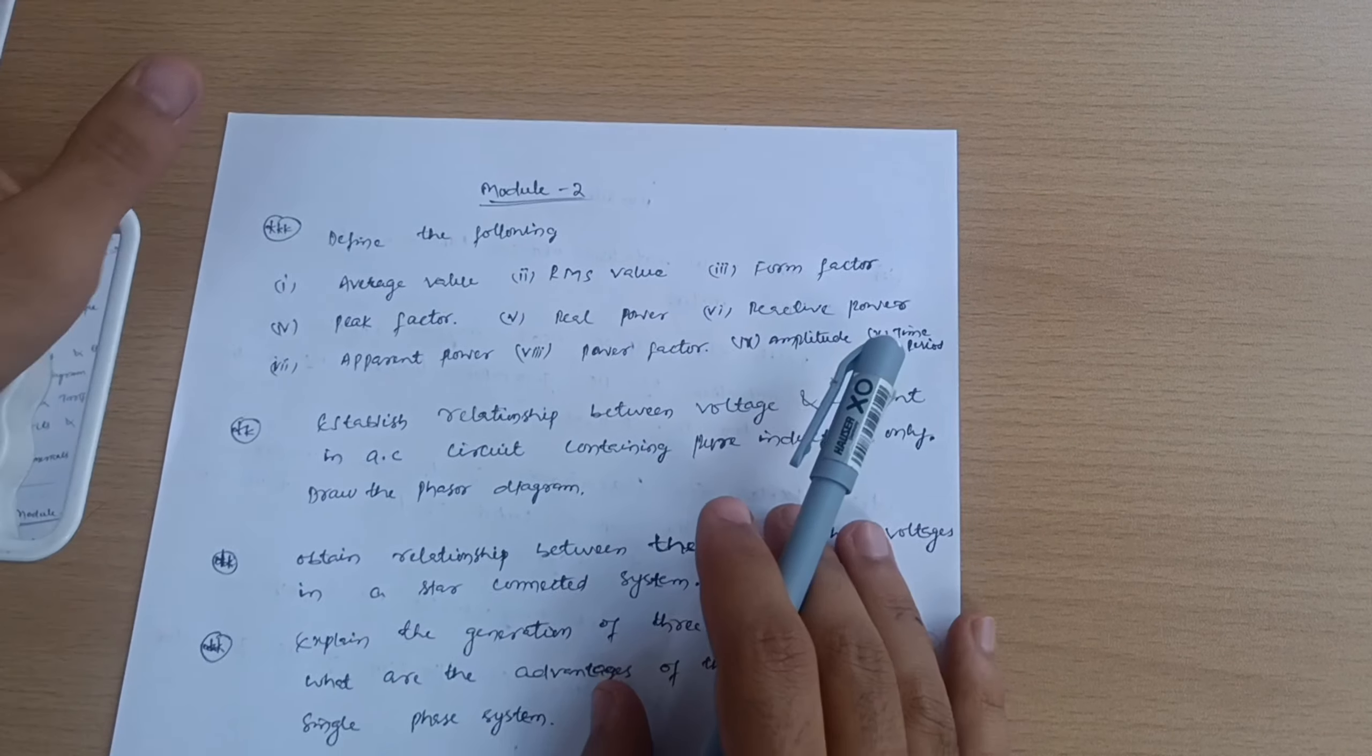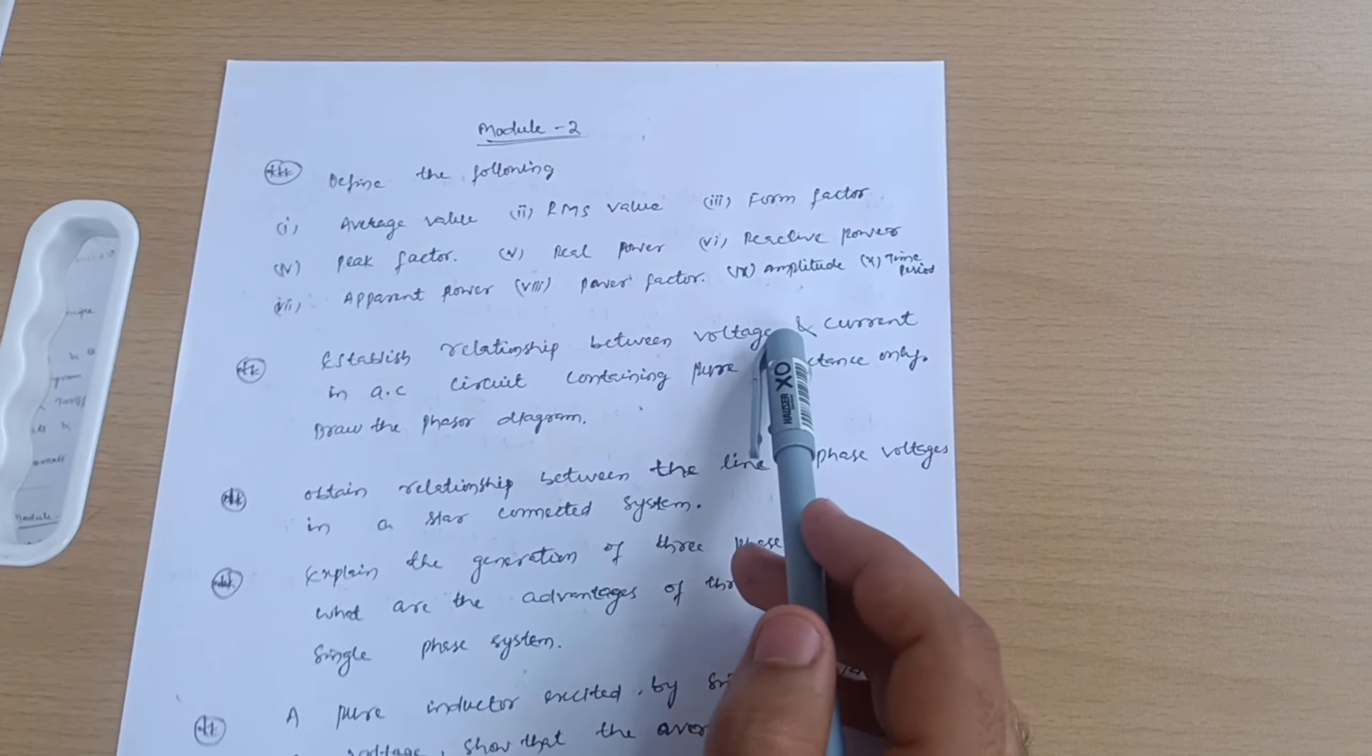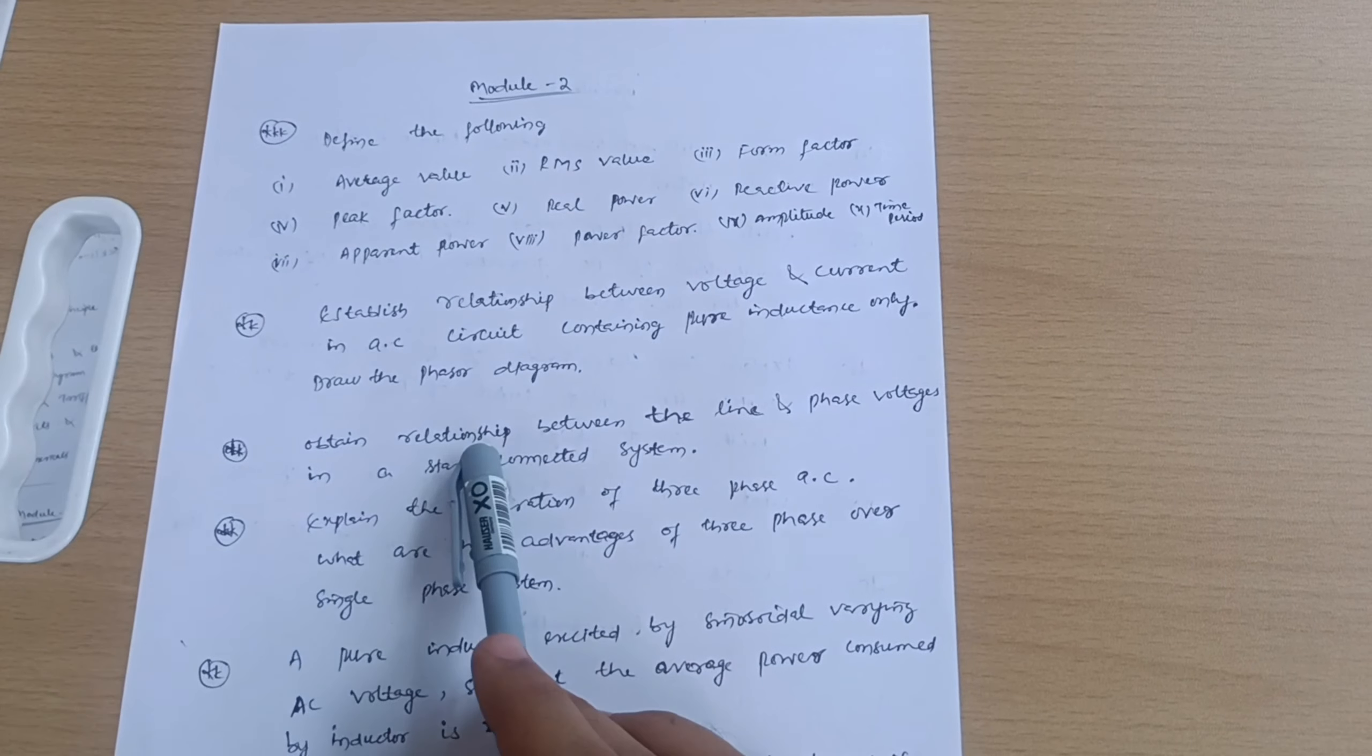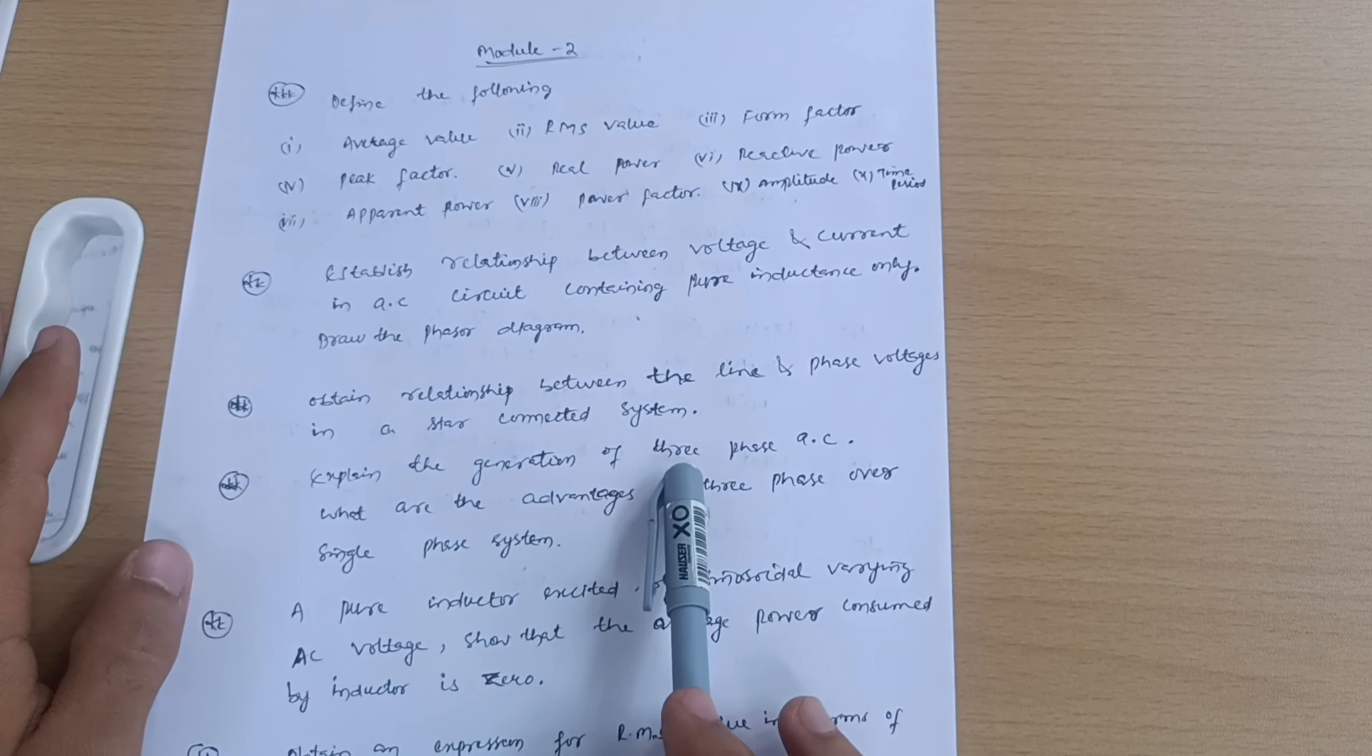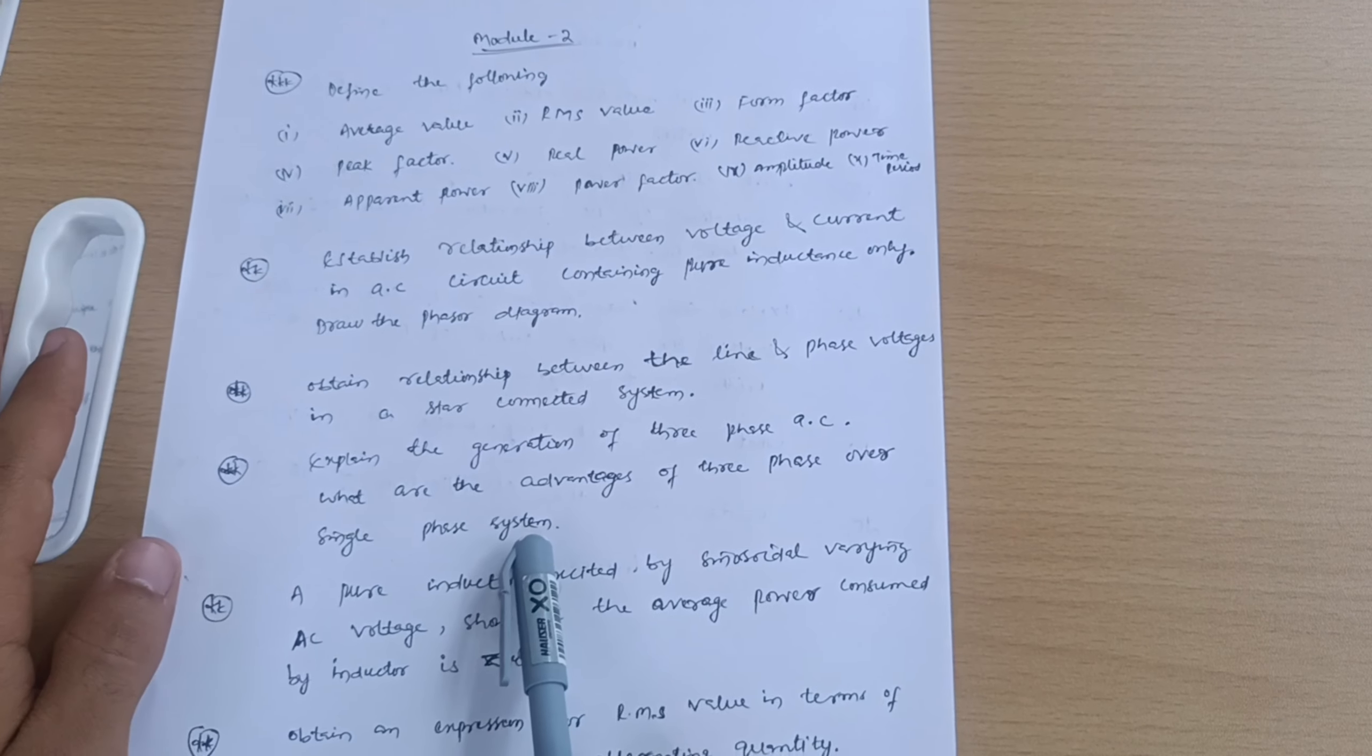Any definitions will do in the examination. Establish a relationship between voltage and current in AC circuit containing pure inductance only. Draw the phasor diagram. Obtain relationship between line and phase voltages in star connected system. Explain the generation of three phase AC. What are the advantages of three phase over single phase system?